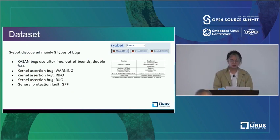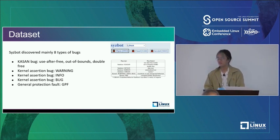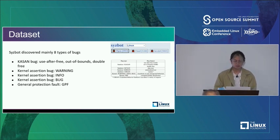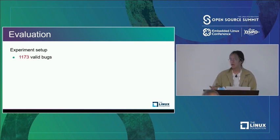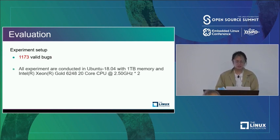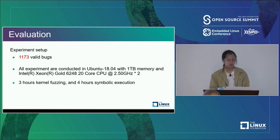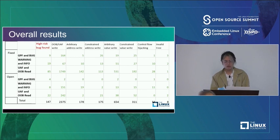The dataset for our experiment comes from SysBot. We selected all memory read bugs, warning/info bugs, general protection faults, and bug-category bugs — roughly 75% of bugs on SysBot. After deduplication and ruling out cases without a valid PoC or not targeting the upstream kernel, we obtained around 1,100 valid bugs. We ran three-hour kernel fuzzing and four-hour symbolic execution per bug.